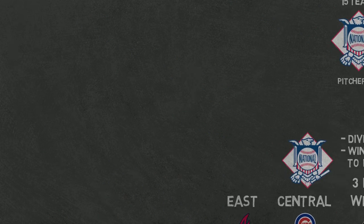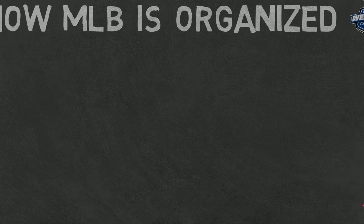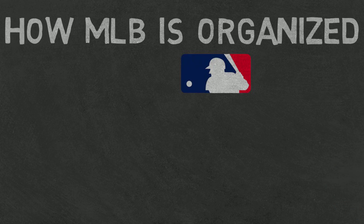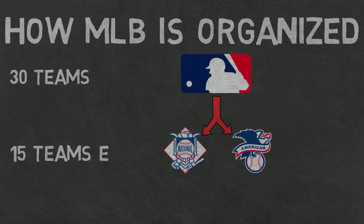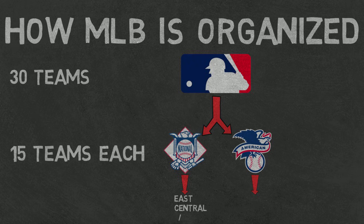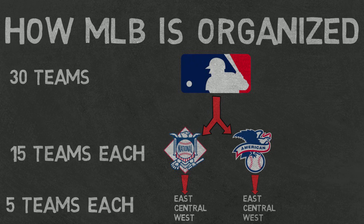So now you should have a basic understanding of the structure of Major League Baseball. To recap, there are 30 teams divided into two smaller leagues or conferences of 15 teams each. Each league is then divided into three geographical divisions of five teams each, giving us six total divisions. If you found this video useful, be sure to like and share, and remember to subscribe to Out of Here Baseball so you don't miss any future uploads. Thanks for watching.